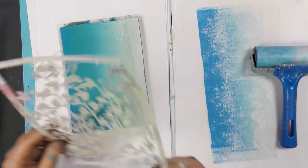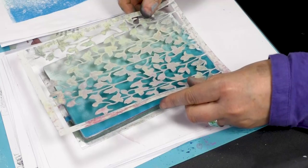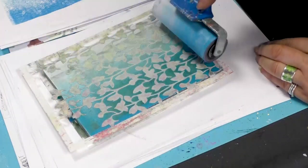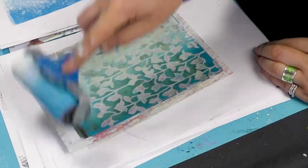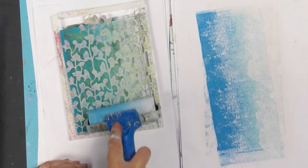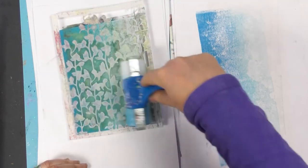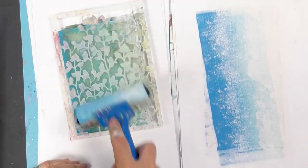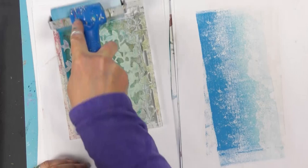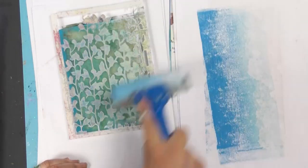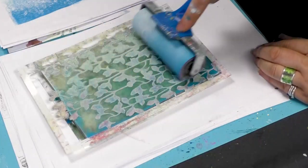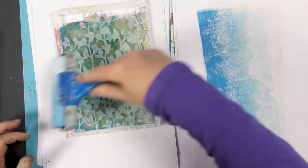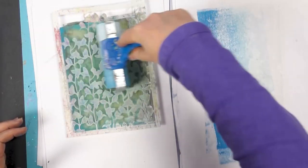So taking our stencil now, I'm going to just pop that over the top and then rolling that over the top. I'm just going to take all the excess paint off on the areas that are more exposed. And I'm just going to apply a little bit of pressure. I'm not too worried about the edge. It's quite nice leaving that.